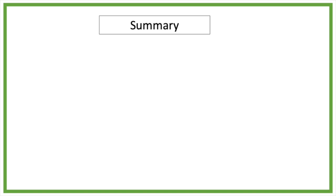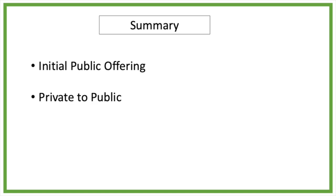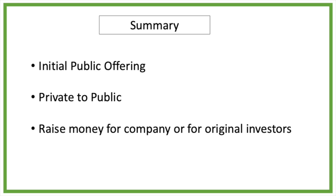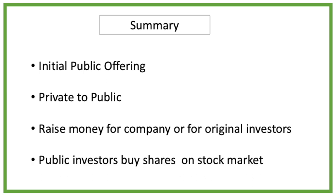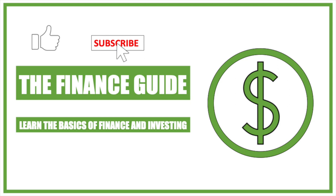I will end today's video with a summary. IPO stands for Initial Public Offering and is the moment a company goes from a privately owned to a publicly traded company. Companies do this to raise money for the company to grow more in the future, or so original investors can sell part of their shares and earn some money. When companies go public, shares can be bought by public investors on the stock market. I hope you enjoyed today's video. Please like and subscribe if you want to see more videos like this.